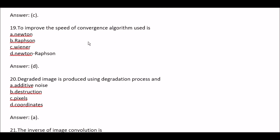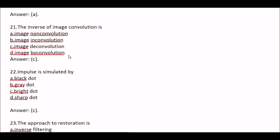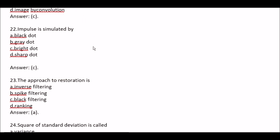Question 19: To improve the speed of convergence, algorithm used is — Option A Newton, Option B Rapson, Option C Wiener, Option D Newton-Rapson. Right option is Option D, Newton-Rapson. Question 20: Degraded image is produced using degradation process and — Option A Additive noise, Option B Destructions, Option C Pixels, Option D Coordinates. Right option is Option A, Additive noise. Question 21: The inverse of image convolution is — Option A Image non-convolution, Option B Image in-convolution, Option C Image deconvolution, Option D Image by-convolution. Right option is Option C, Image deconvolution. Question 22: Impulse is simulated by — Option A Black dot, Option B Gray dot, Option C Bright dot, Option D Sharp dot. Right option is Option C, Bright dot.